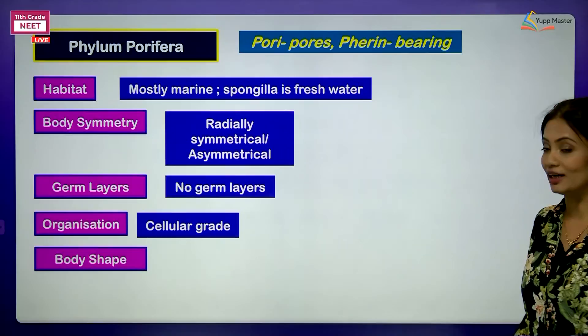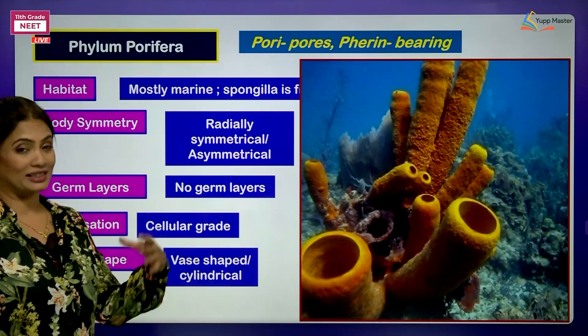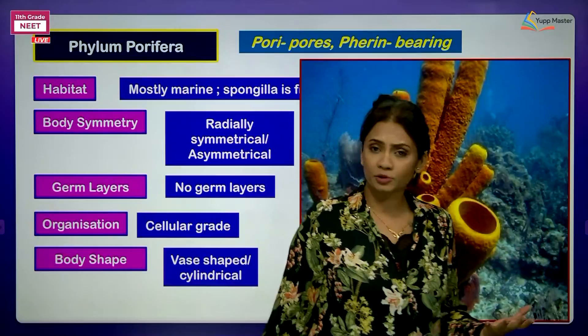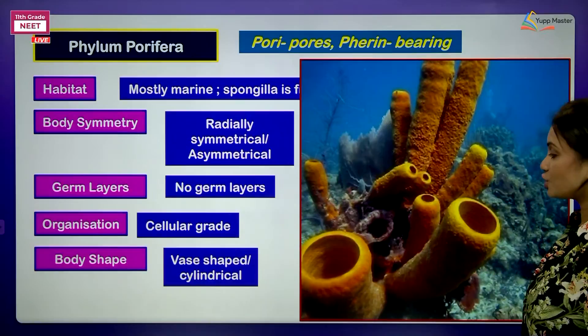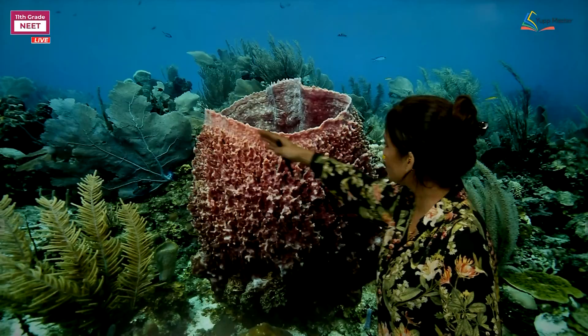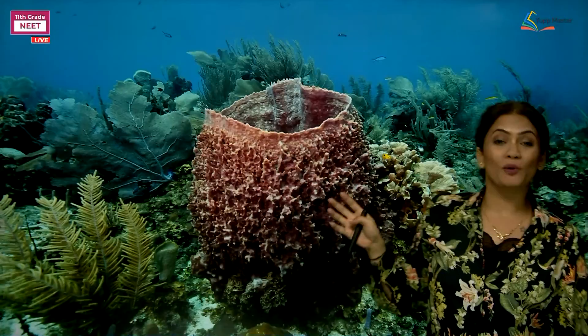They are multicellular animals still staying as cellular grade of organization. The body shape is very interesting - they are vase-shaped or cylindrical. They are so colorful, these organisms found in the sea, which makes the sea very beautiful to look at. Look at this sponge here - can you see it has one big major opening on the top? Let's see what this is all about.